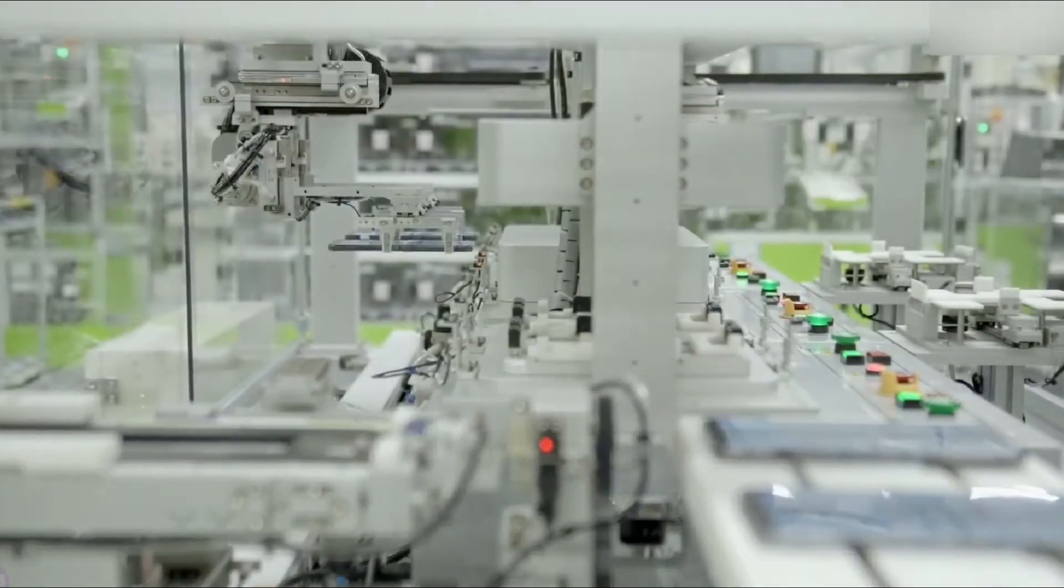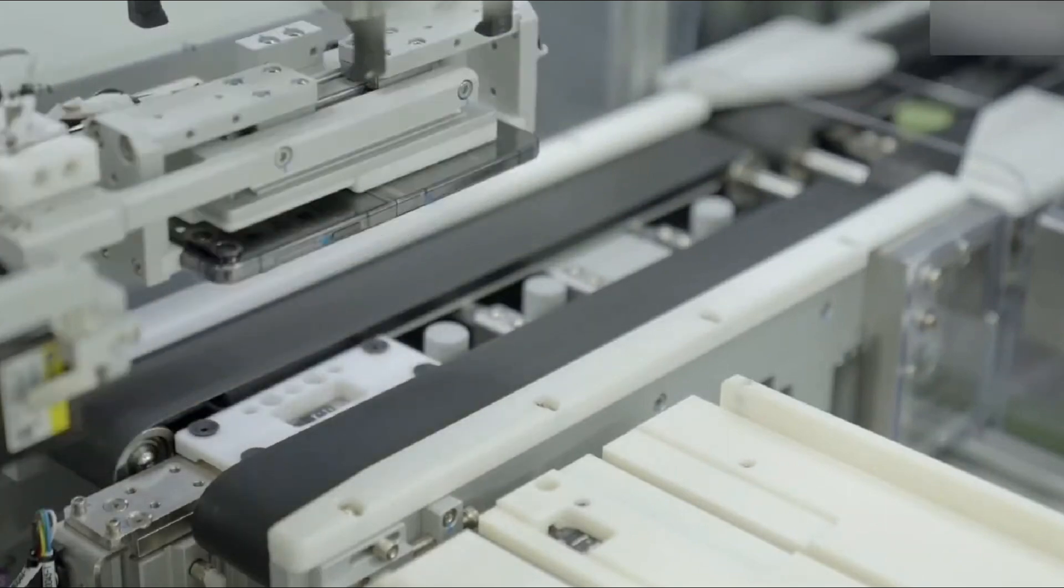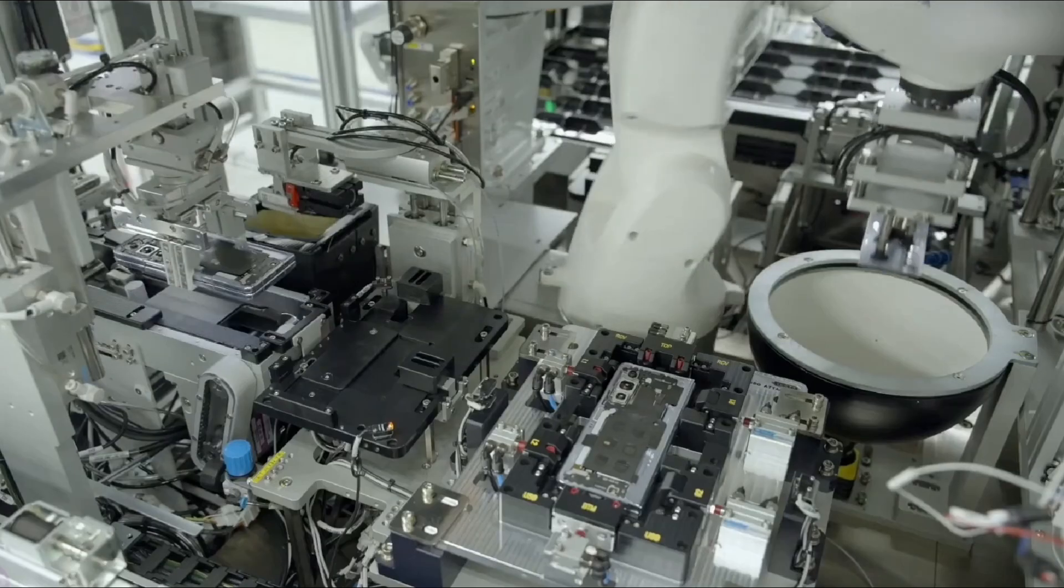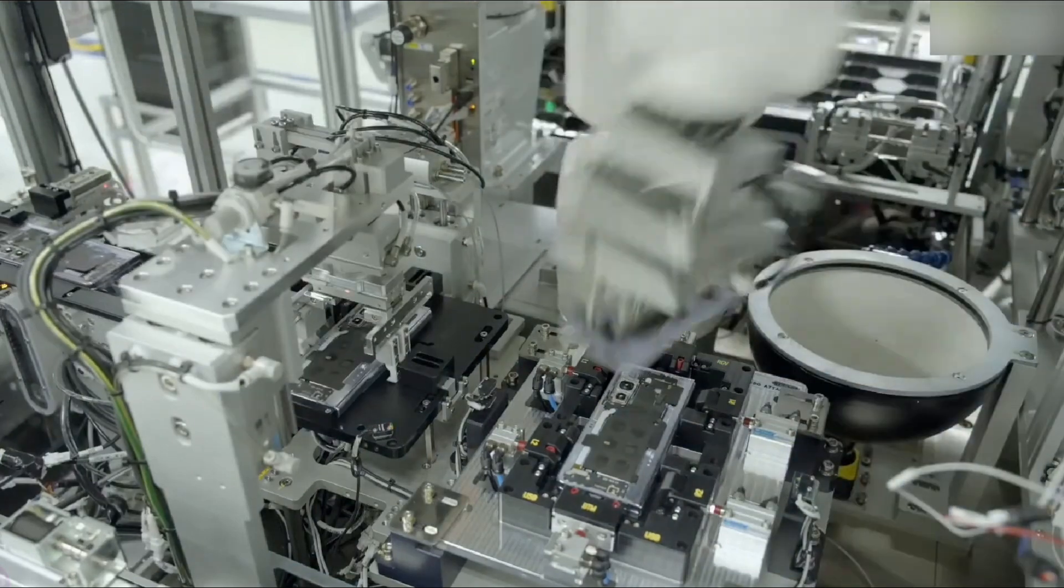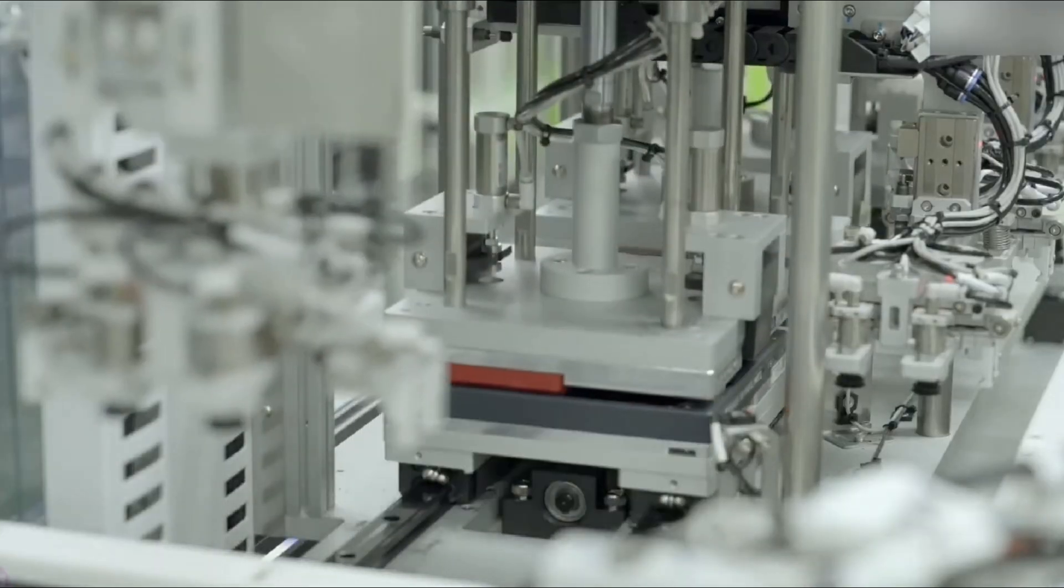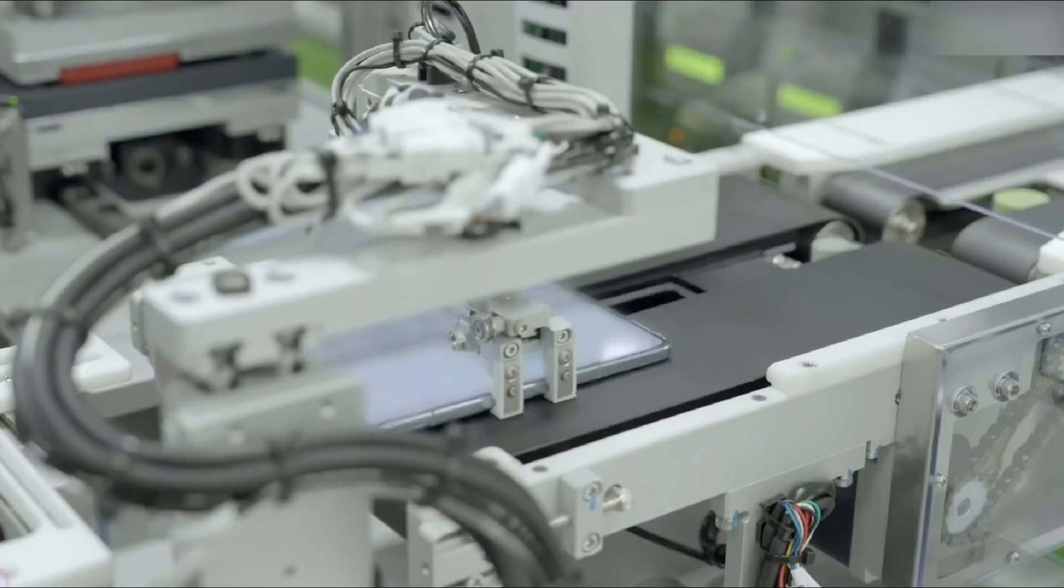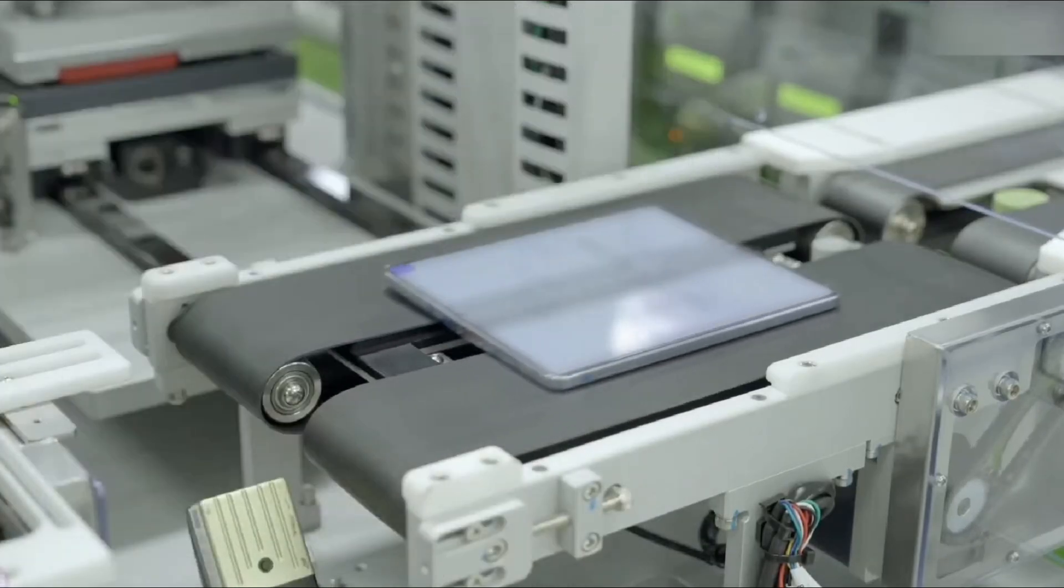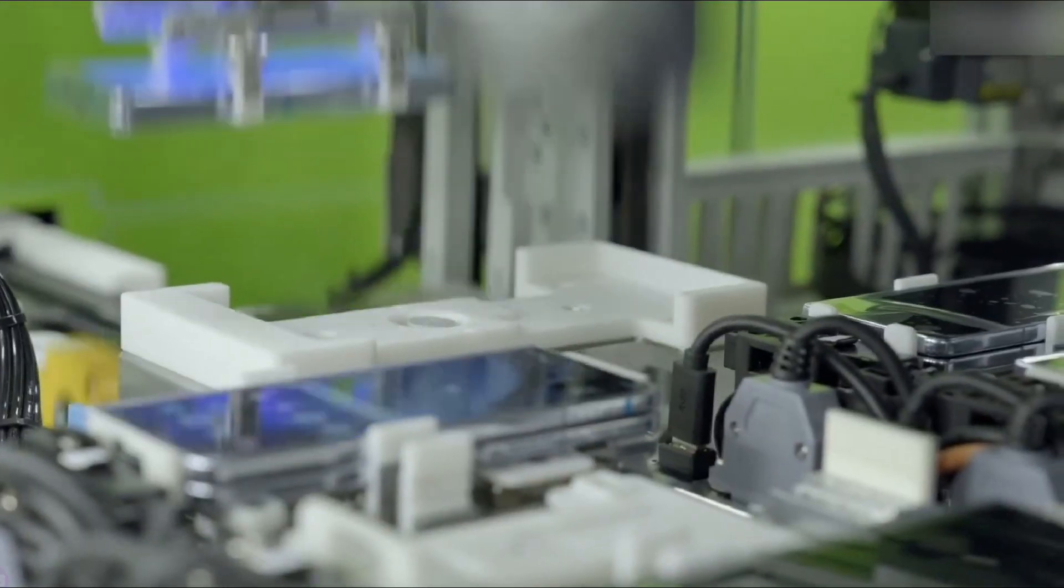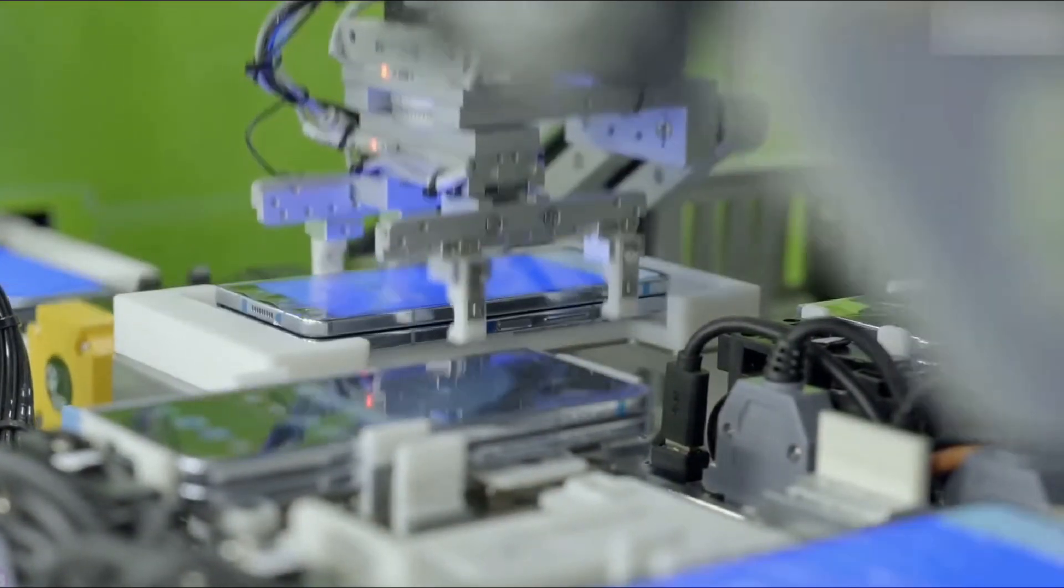The process begins with a digital inventory of all necessary components, followed by robots assembling each device using advanced automated systems. The soldering and casing processes are entirely handled by machines, ensuring seamless integration of parts. This automation not only increases production speed but also enhances consistency and quality control, reducing the likelihood of defects.